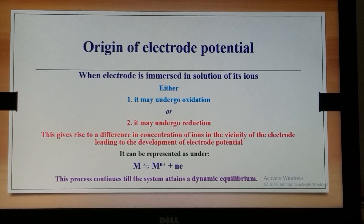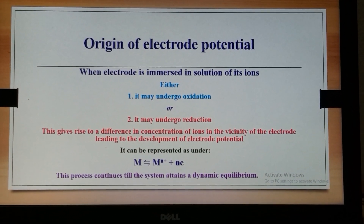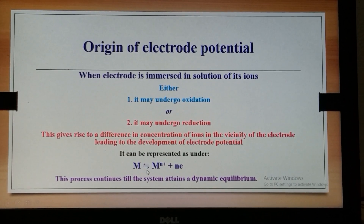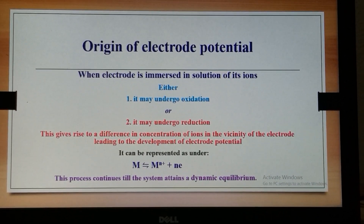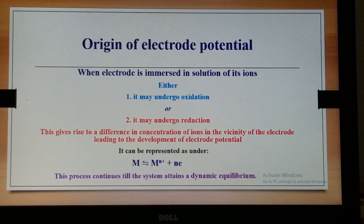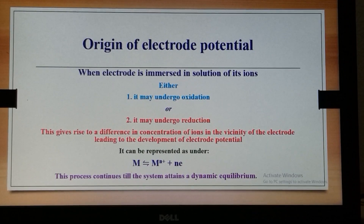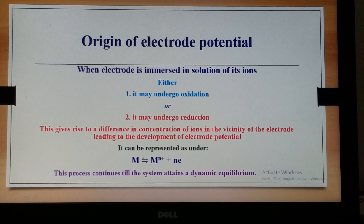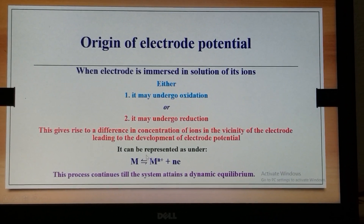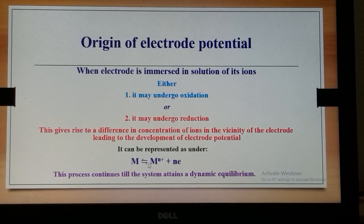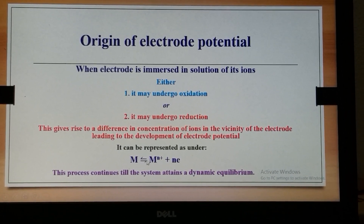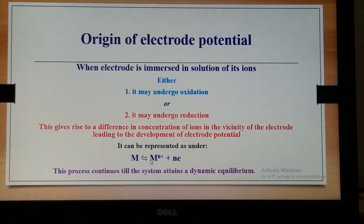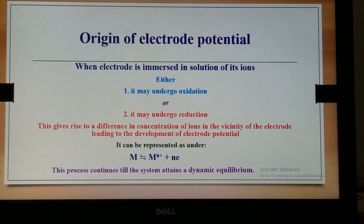Here we see the arrows — the lower arrow representing oxidation and the upper arrow representing reduction, and both are occurring simultaneously. This shows the dynamic equilibrium.